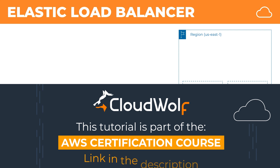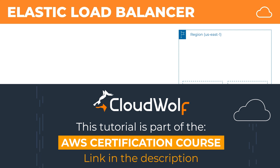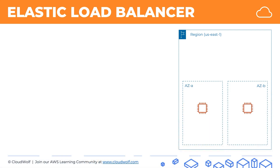Let's look at a simple architecture. We have an EC2 instance running a website and we have another EC2 instance running the same website. Why that is necessary we'll find out in a second. What we can do in AWS is we can link them together into a target group.